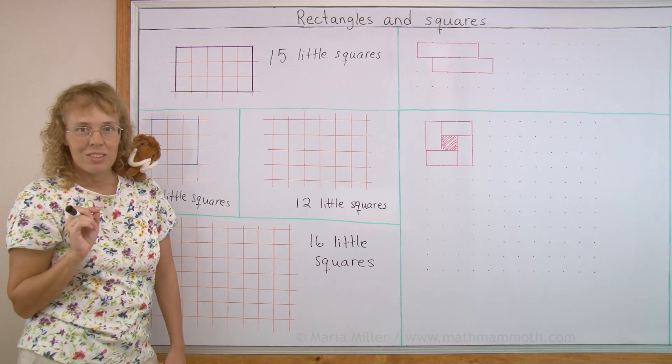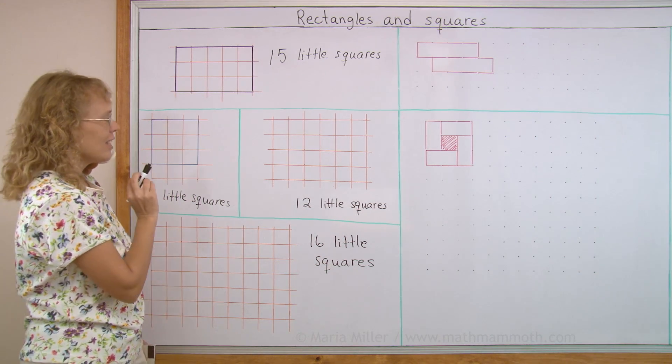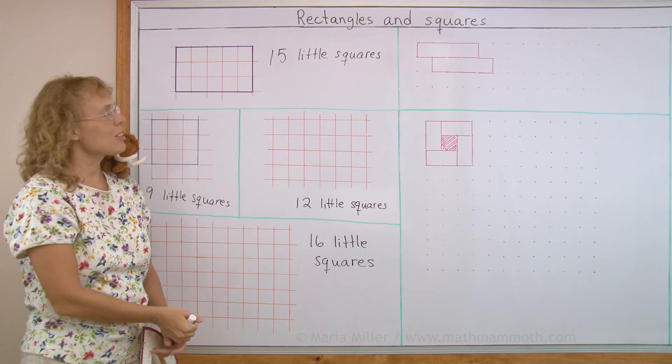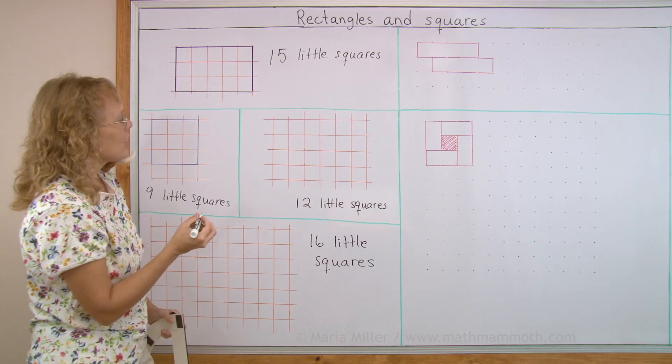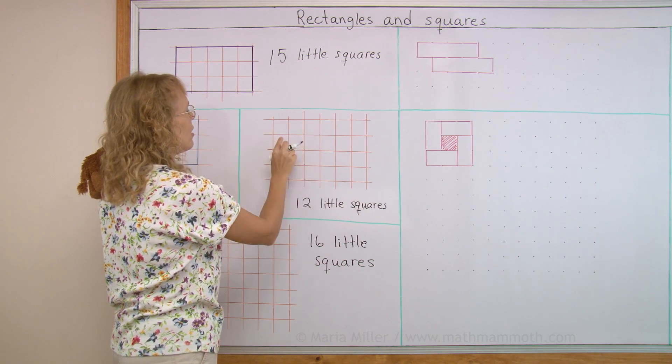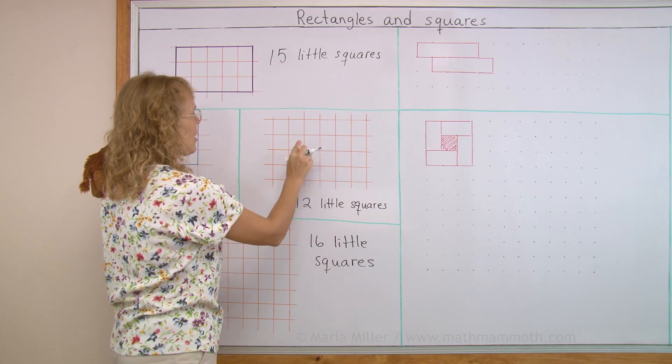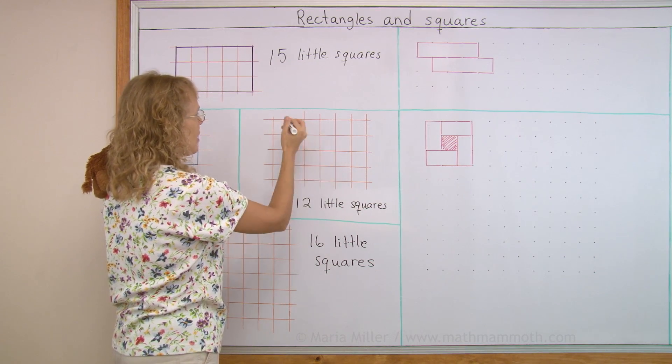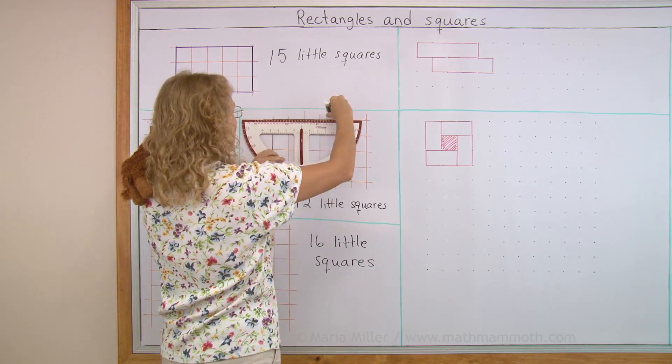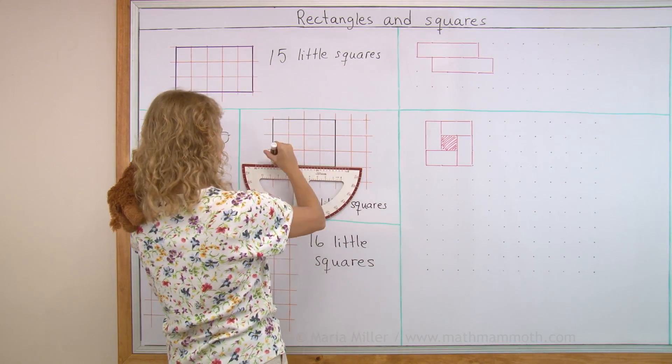And if you try to do the same, there's actually several different rectangles you can draw having 12 little squares inside. So, okay, 1, 2, 3, 4, 5, 6, 7, 8, 9, 10, 11, 12. See, that will work. Like that.